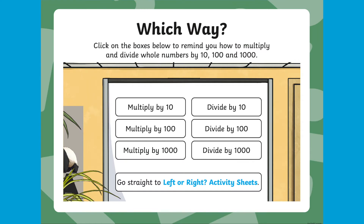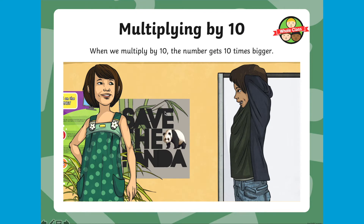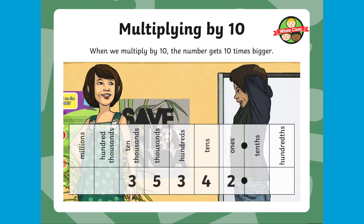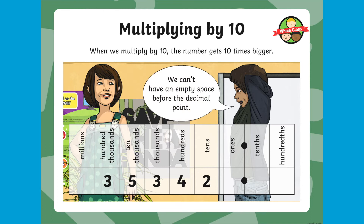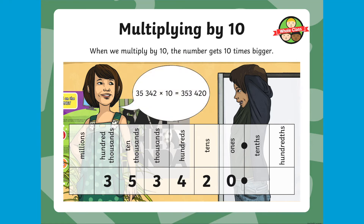Think about if the digits are moving left or right. When we multiply by 10, the number gets 10 times bigger. So if we look at this number 35,342 and multiply it by 10, the digits move one space to the left. We can't have an empty space before the decimal point, so we put a zero there as a placeholder. So 35,342 times 10 is 353,420.